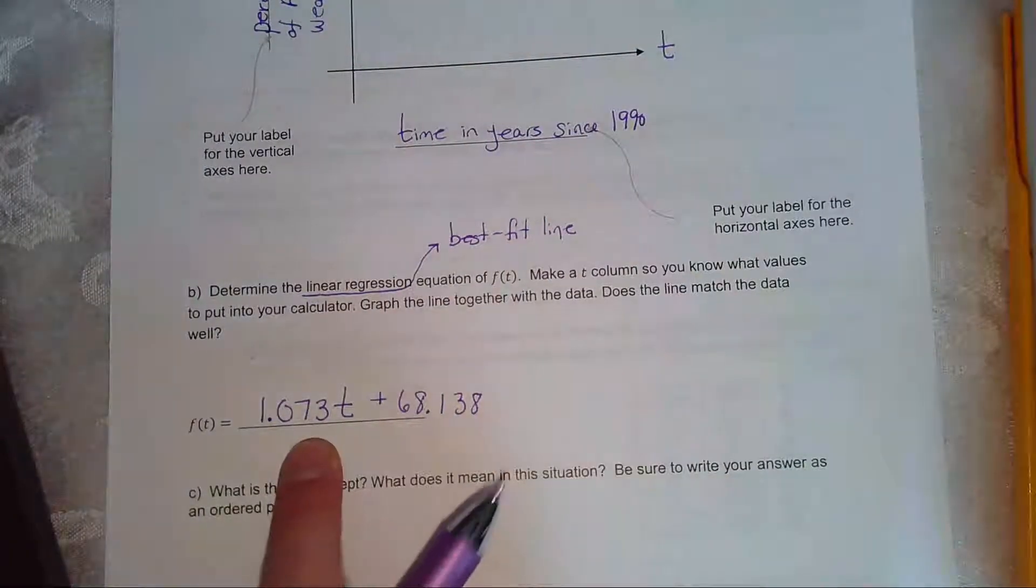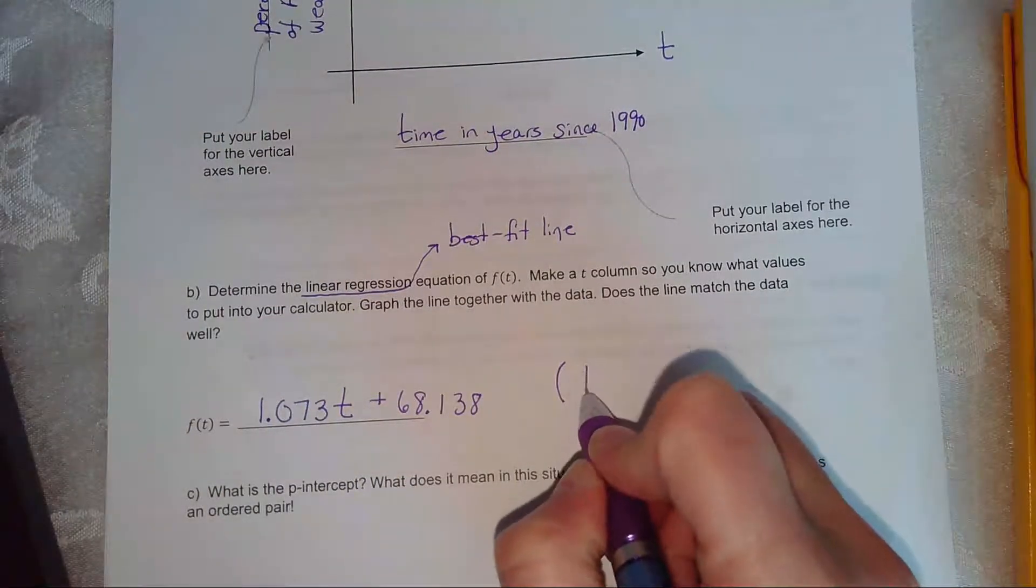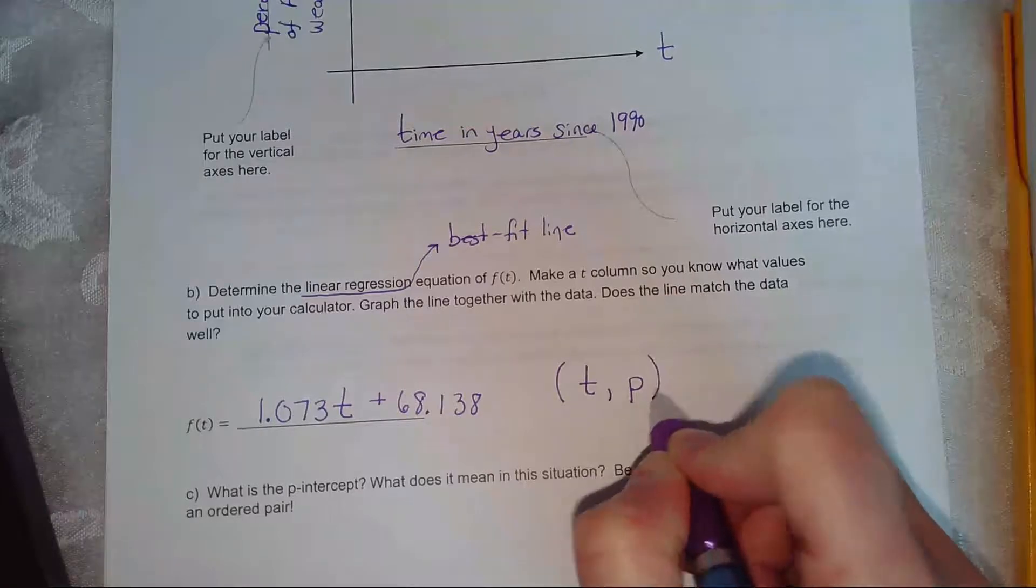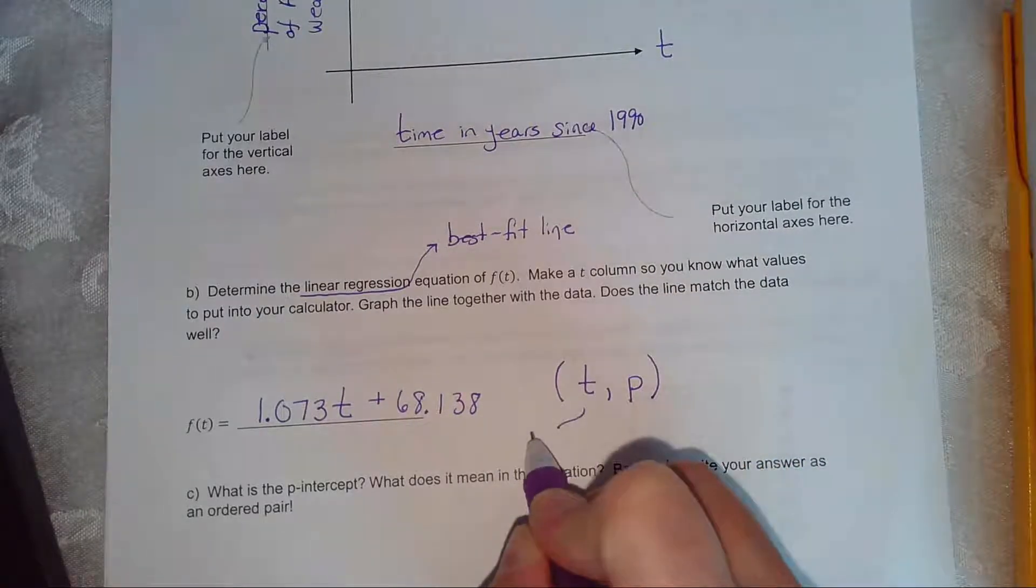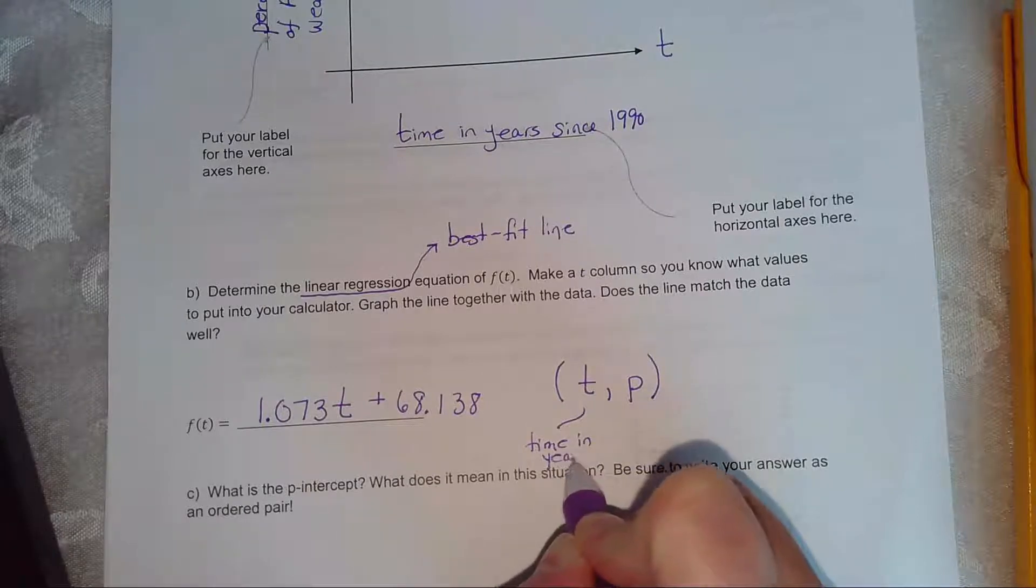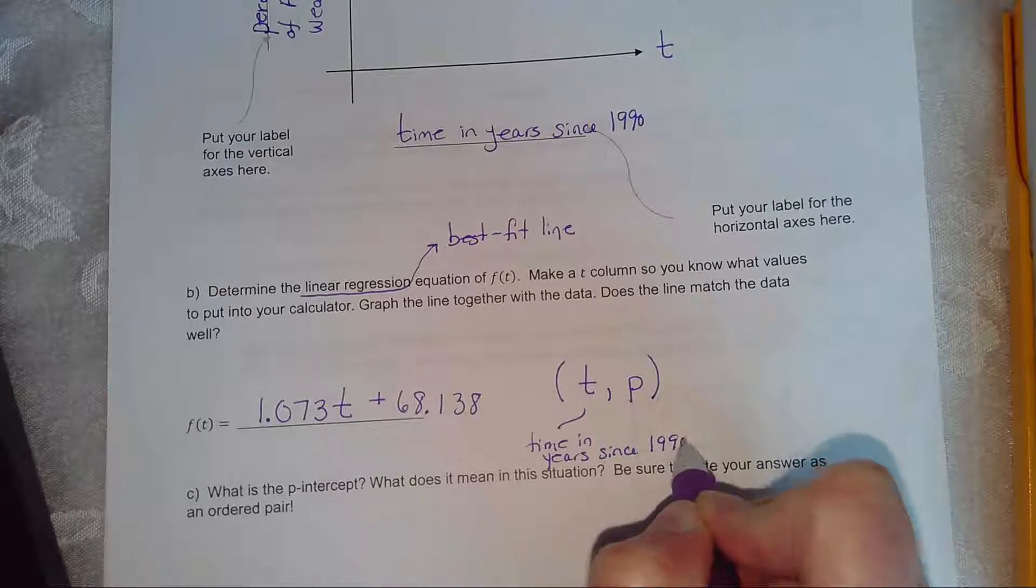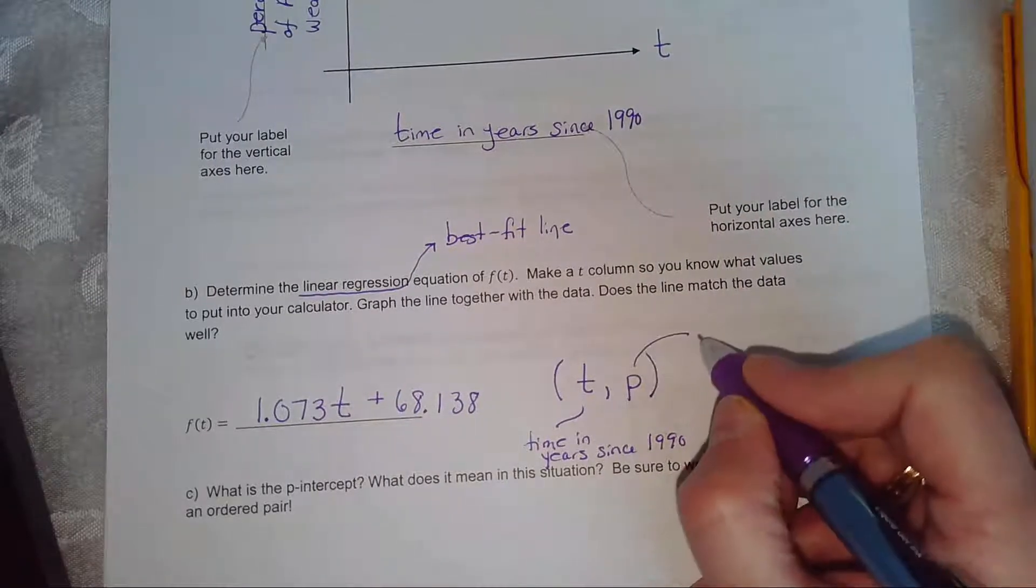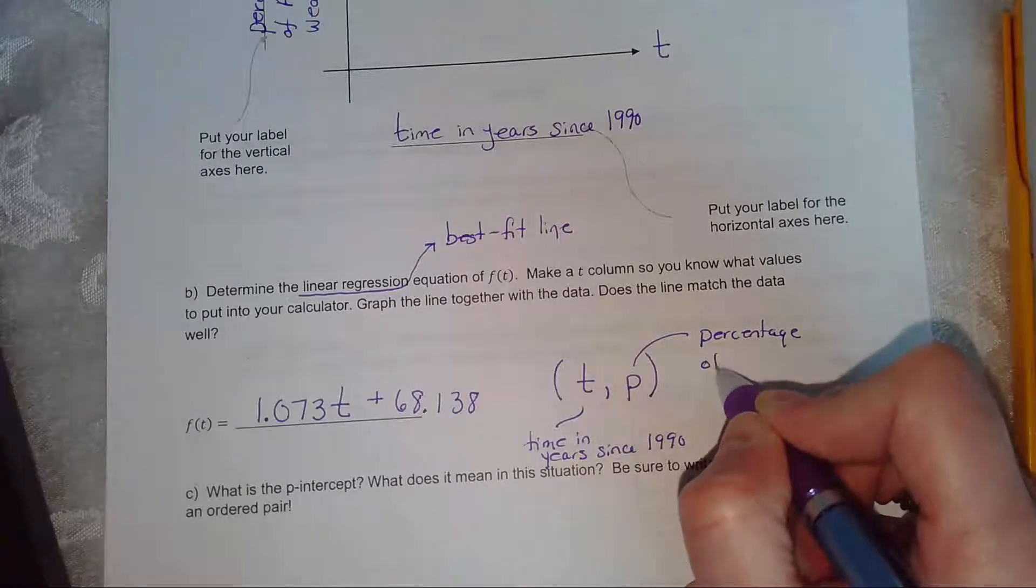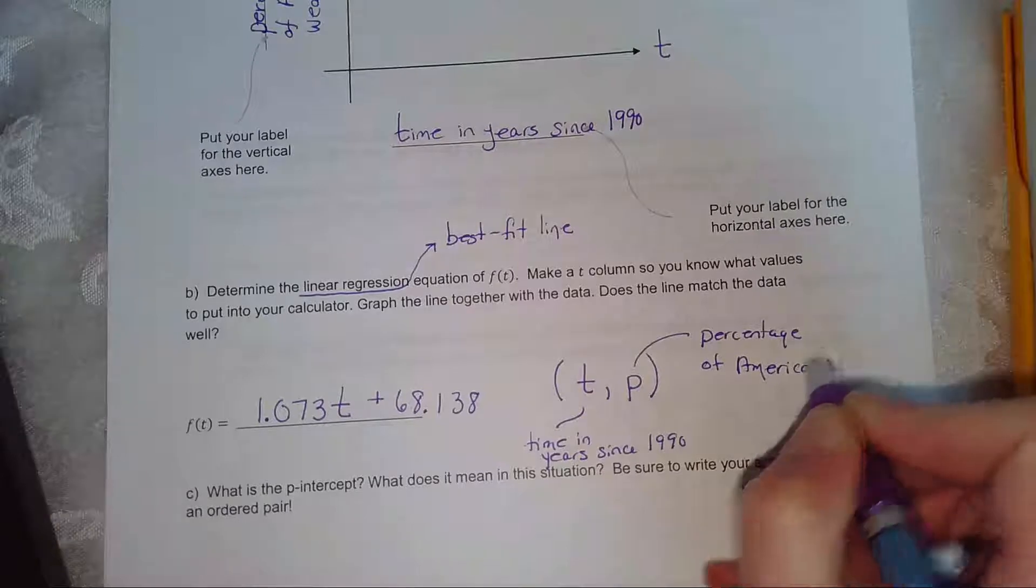So each ordered pair that we plotted, I just am going to remind you, is in the order of t comma p, where t is time in years since 1990. And p is the percentage of Americans wearing seat belts.